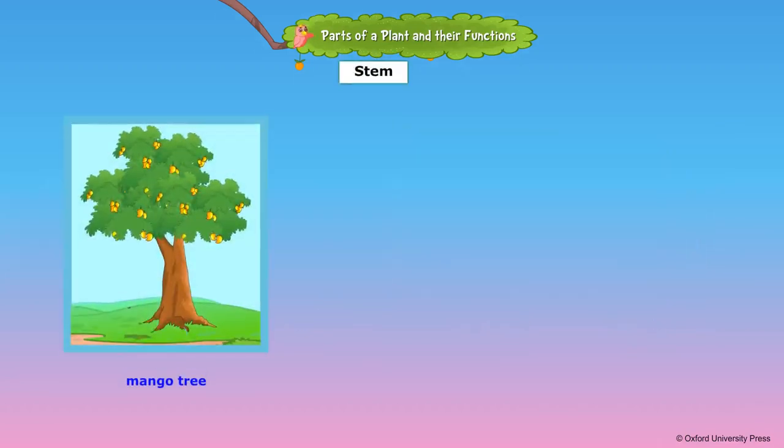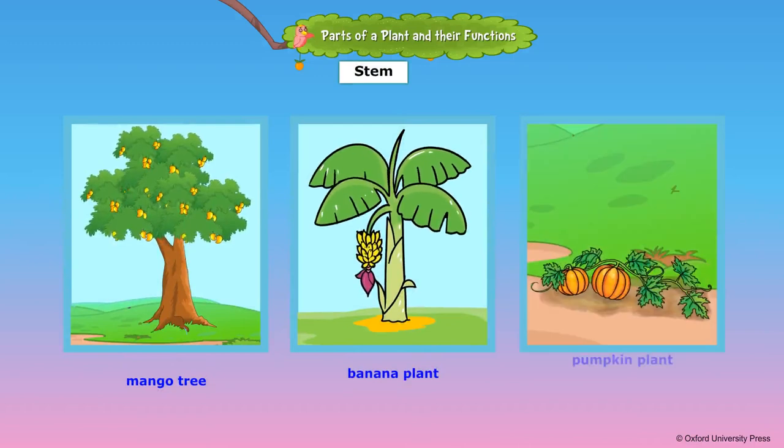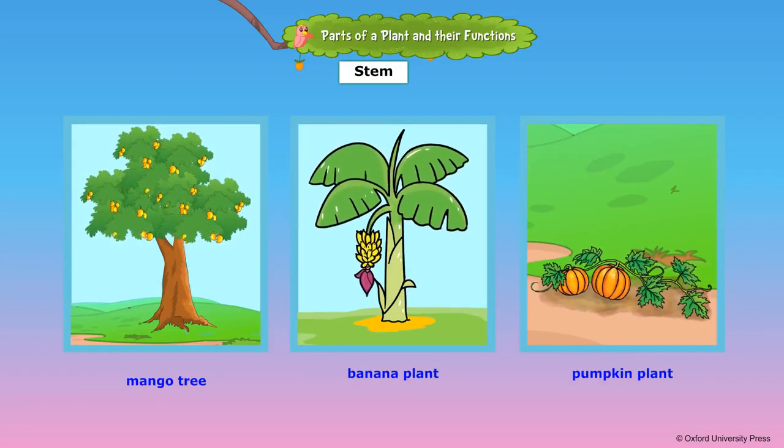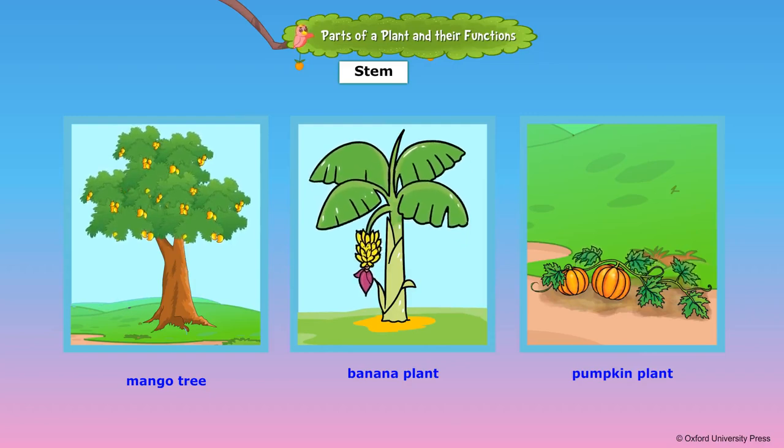The stem is the main part of the shoot system. It holds the plant upright. It supports the branches, leaves, buds, flowers and fruits.